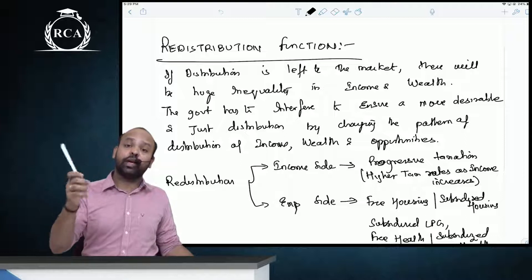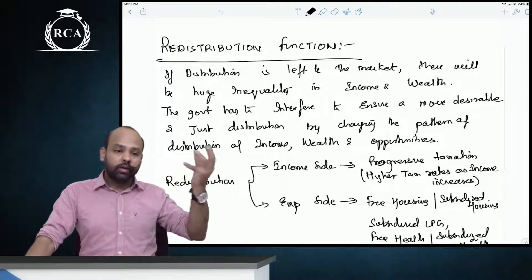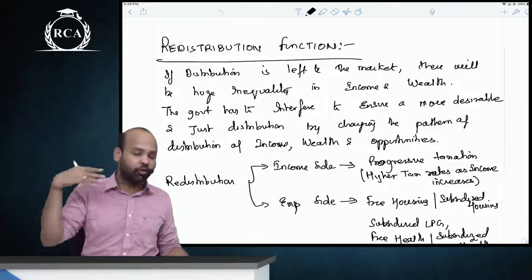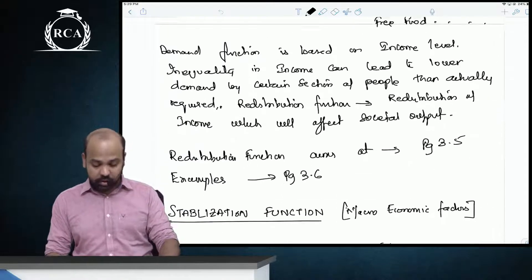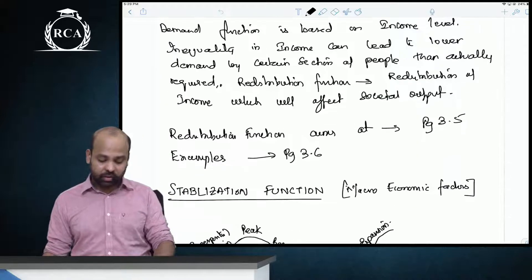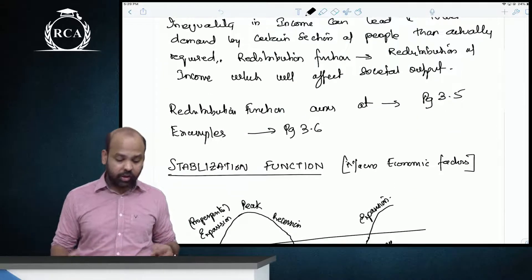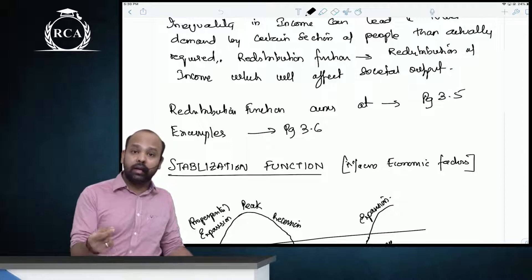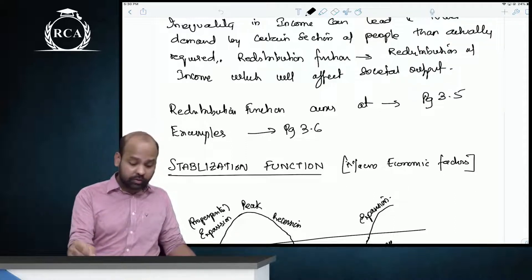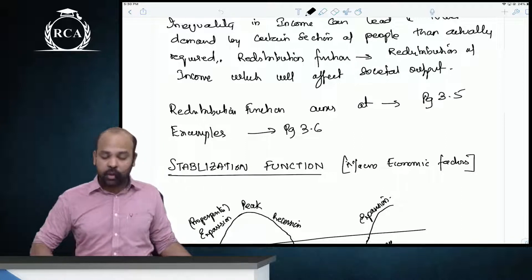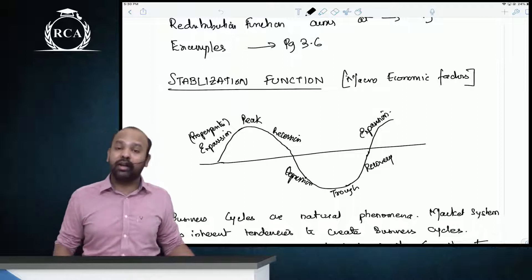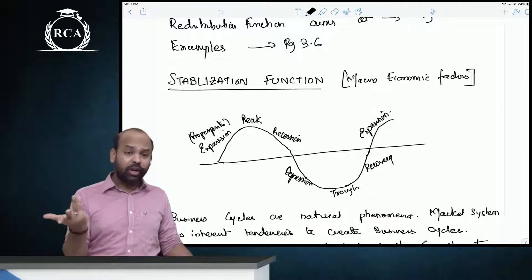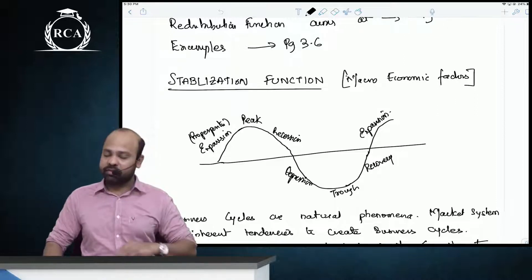Redistribution can be addressed on the income side by levying higher taxes on individuals with higher incomes. On the expenditure side, it includes free housing, subsidized housing, free food, subsidized food, free electricity, and subsidized petroleum products. The redistribution function aims to ensure just distribution of societal output, advance the well-being of society members, provide equality in income, wealth and opportunities, and provide security — also through reservations, scholarships, and progressive taxation.